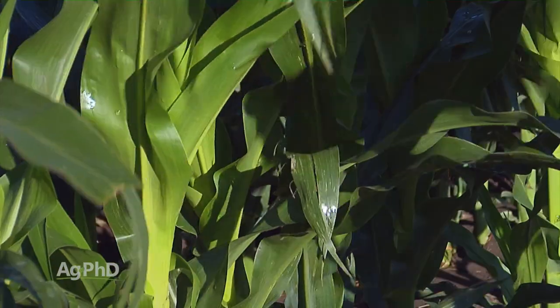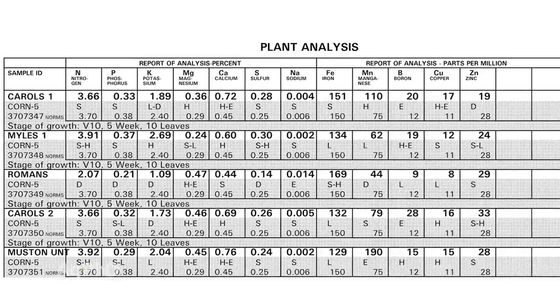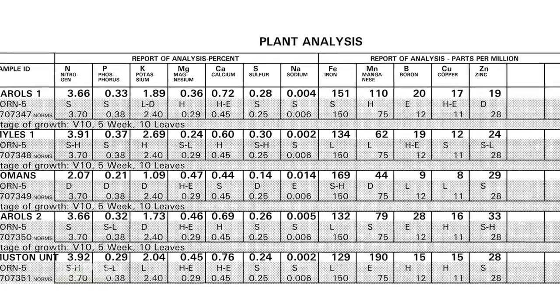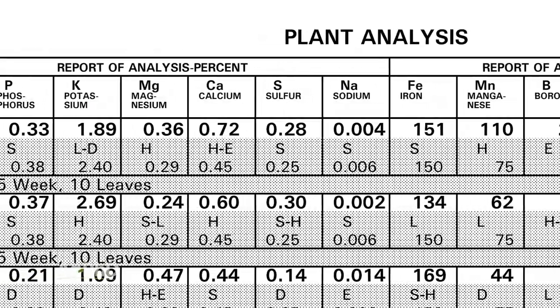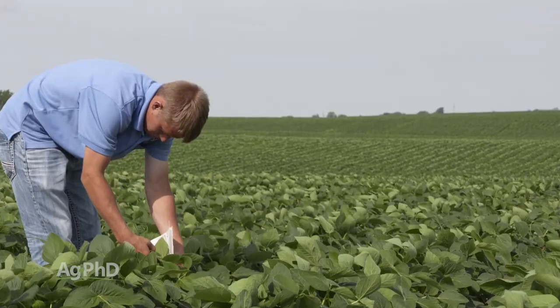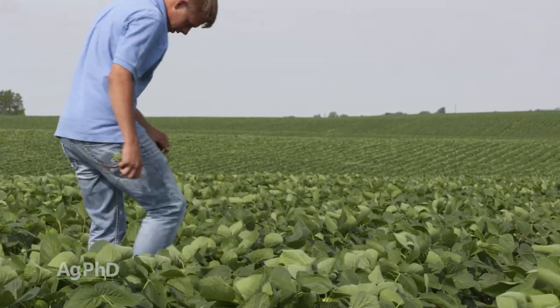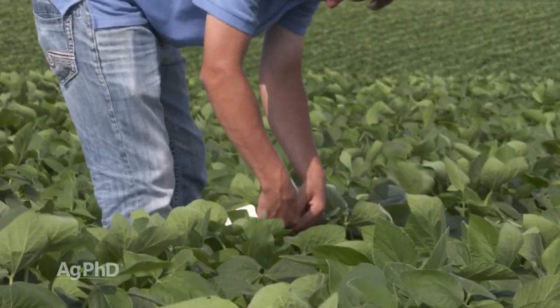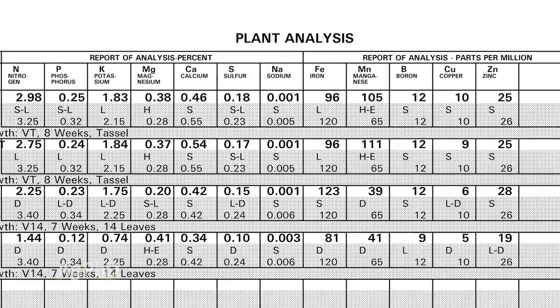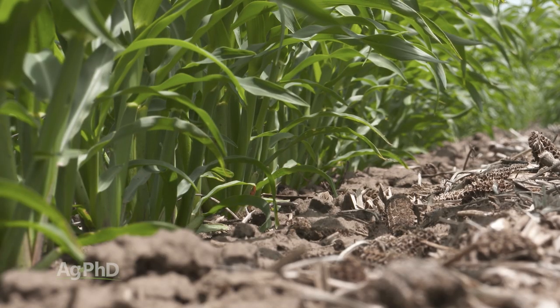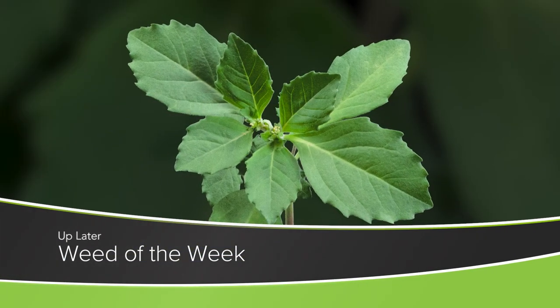No one knows exactly what you should have for each nutrient level at every individual day during the season in order to maximize yield, but over time you can figure that out a little bit on your own, and there certainly are some general guidelines out there. Plant tissue analysis I often call the report card of the farmer, because you can see what's in that plant as far as nutrients and compare that to what your fertility program has been. Field scouting is really the report card for your weed control program, and if you see this week's Weed of the Week on your field, you're going to want to address it.